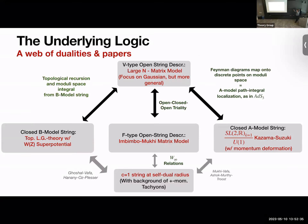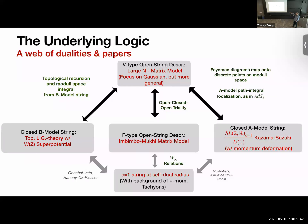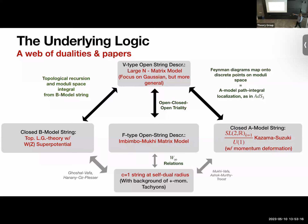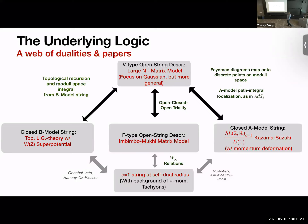Now let me tell you about the underlying logic of the proof. We've been looking at this open string description — some large-N matrix model, focusing on the Gaussian. Instead of directly deriving these closed strings, we do something a little strange: we first go to a different open string description, i.e., a different matrix model. This matrix model is actually well understood in terms of string theory from old results in the '90s — it was understood to be a generating function for correlators in another string theory.